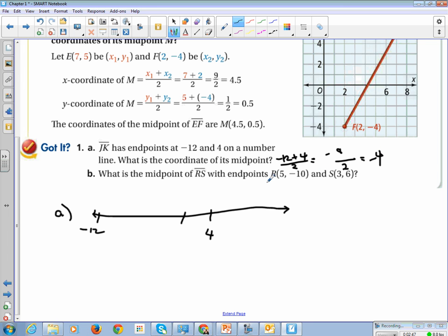Alright, so now when we have coordinates, what is the midpoint of RS when the endpoints are 5, negative 10, and 3, 6? So we're going to take the x-coordinates and add them, divide by 2, which is 8 over 2, which is 4. And we're going to take the y-coordinates, add them together, divide by 2. And that's negative 4 divided by 2, which is a negative 2. So I put those together and my coordinate is at 4, negative 2.